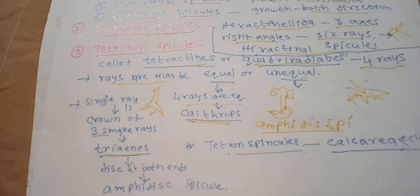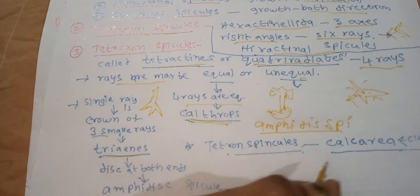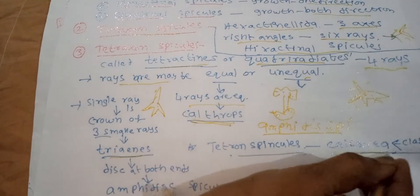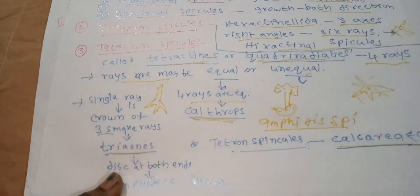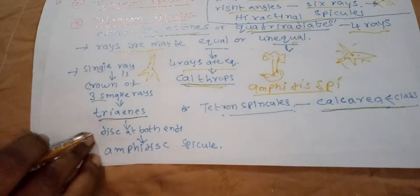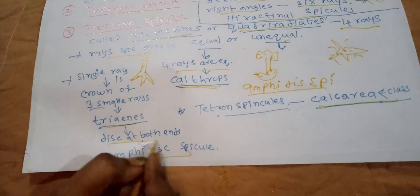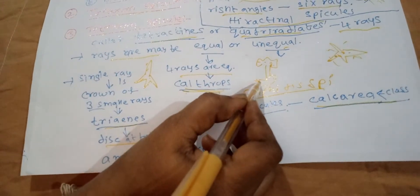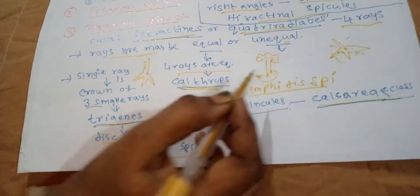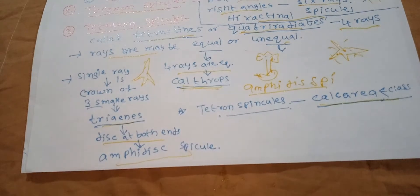Tetraxon spicules are mostly found in class Calcarea. This includes amphidisc spicules and tetraxon spicules.